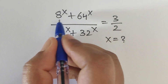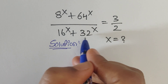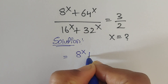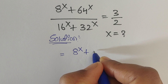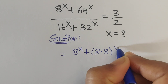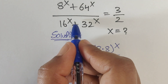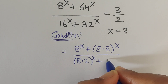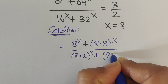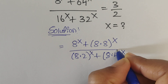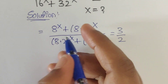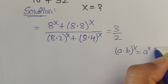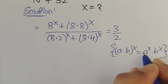We have 8^x plus 64^x divided by 16^x plus 32^x. Now 64 we can write as 8 times 8, whole to the power x. In the denominator, 16 we can write as 8 times 2, so 8 times 2 whole to the power x, plus 32 we can write as 8 times 4, whole to the power x. We can apply the formula: (a times b)^x equals a^x times b^x.